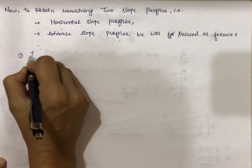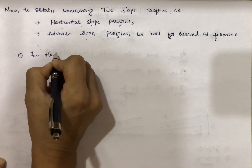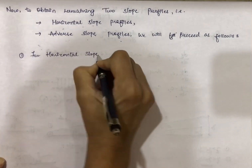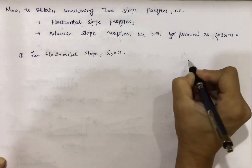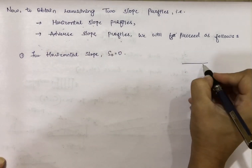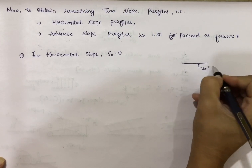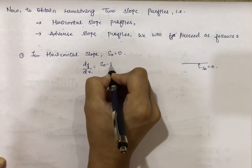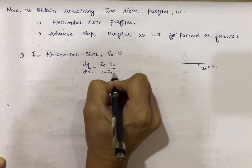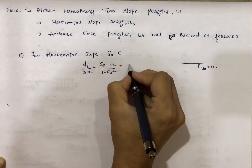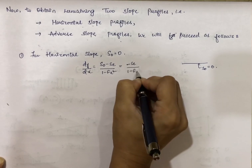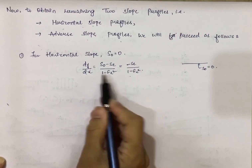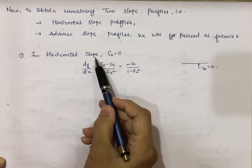Starting with the horizontal slope — we know that bed slope S0 is equal to zero. If your slope is horizontal, then the bed slope will be zero. So in that case, your dy/dx equation becomes 0 minus Sf divided by 1 minus Fr², which gives us minus Sf over 1 minus Fr². So this will be the equation of dy/dx for the horizontal slope.